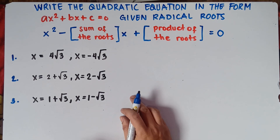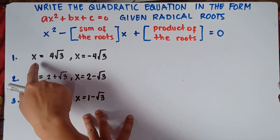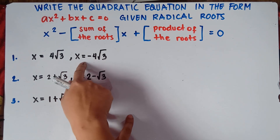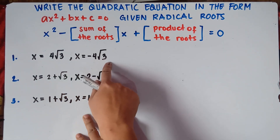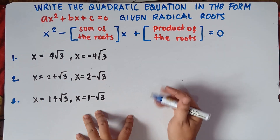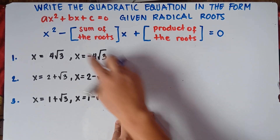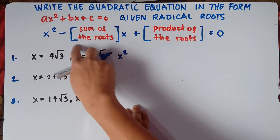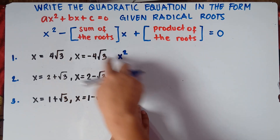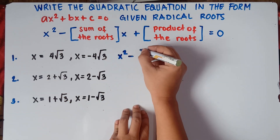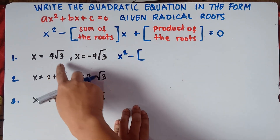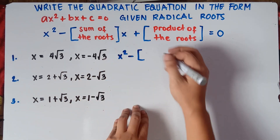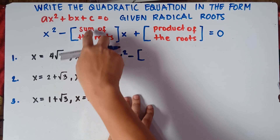So number 1, we have given roots: x₁ equals 4 square root of 3, and x₂ equals negative 4 square root of 3. So these will be our roots. First thing to do, you copy x squared. We will be using this equation: copy x squared minus the sum of the roots. So we have 4 square root of 3 added by negative 4 square root of 3. So you add this one — it means sum.